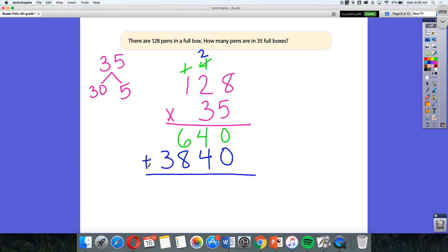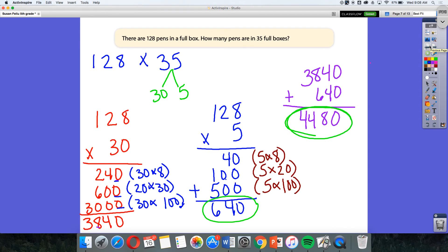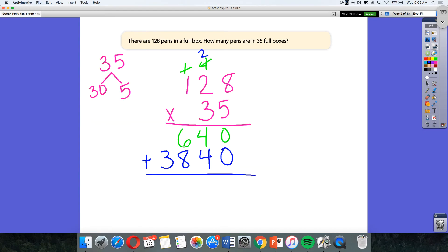So, before I start adding up, let's go again back to our previous problem. And you can see, again, I got 3,840 when I multiplied 30 by 128. Because I had that 240, I had that 600, and I had that 3,000. But I was putting it all in the same line.